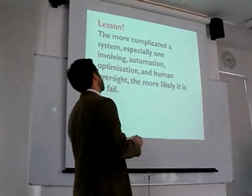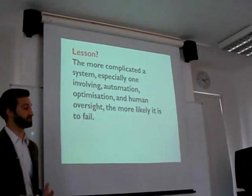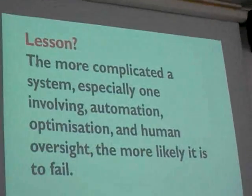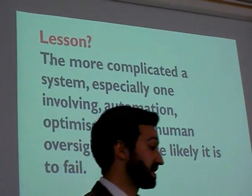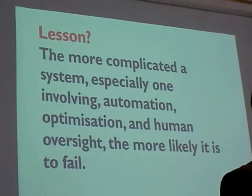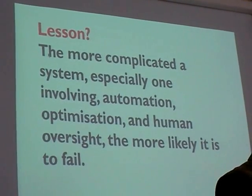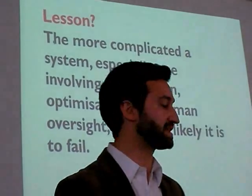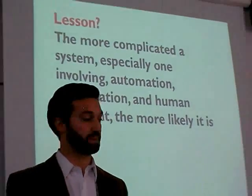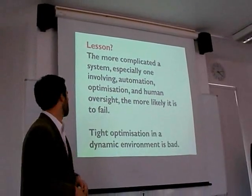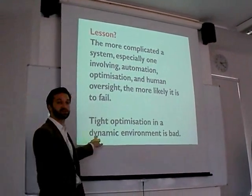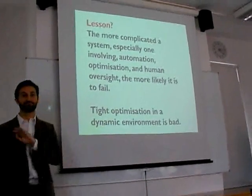So what's the lesson of this first sort of approach to collapse in social systems? Basically, the more complicated it gets, especially if it's automated, involves optimization on a single or a few variables, and requires human oversight, the more likely it is to fail. So, takeaway message, title optimization, in a dynamic environment, bad idea.